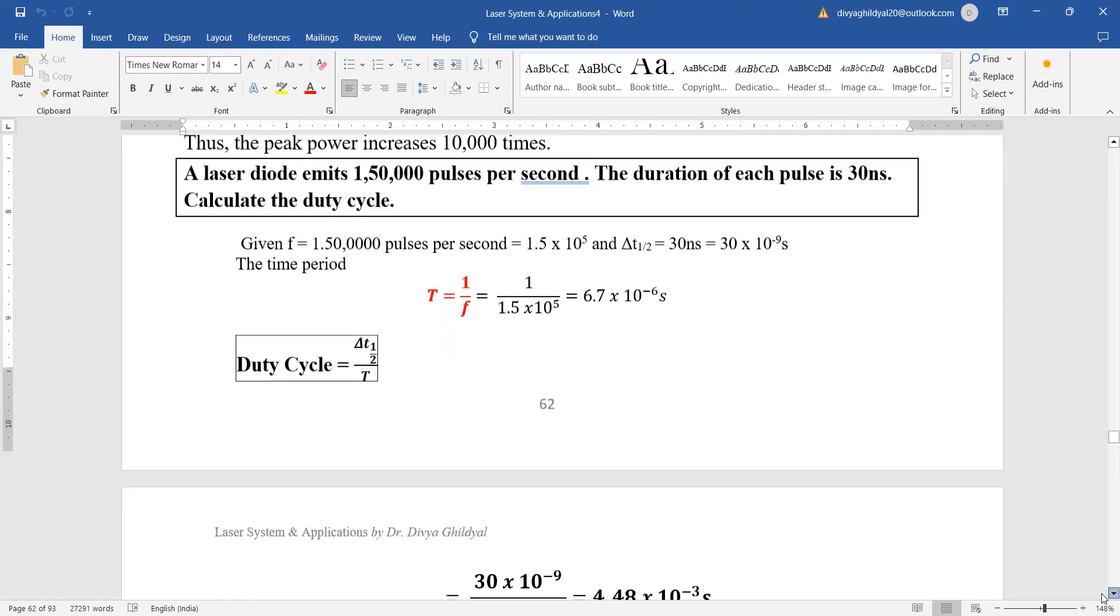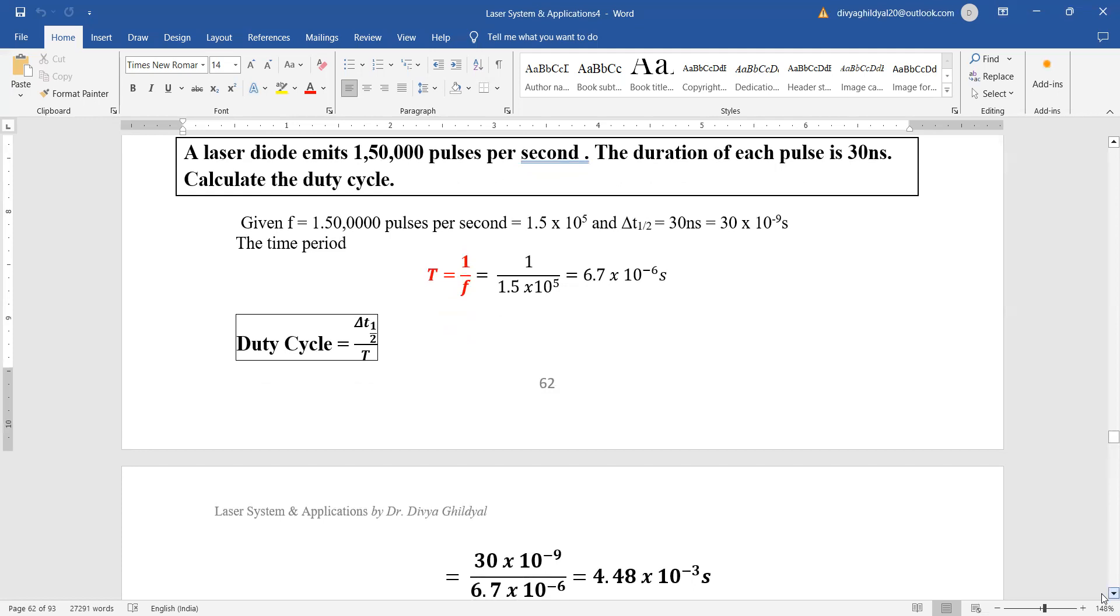A laser diode emits 150,000 pulses per second. The duration of each pulse is 30 nanoseconds. Calculate the duty cycle.